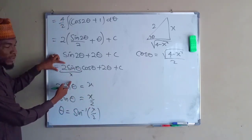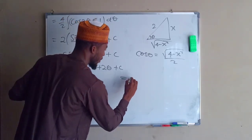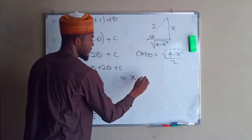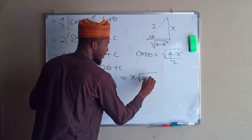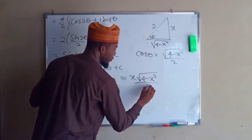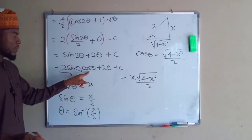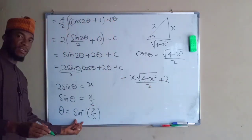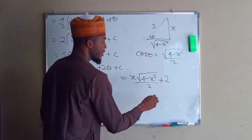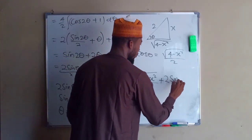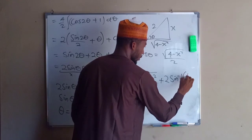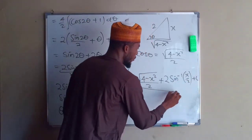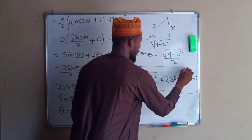We can see that 2 sin theta is x, cos theta is the square root of 4 minus x squared divided by 2, and theta is sin inverse of x over 2. Substituting back, we obtain x times the square root of 4 minus x squared divided by 2, plus 2 times sin inverse of x over 2, plus the constant of integration c. This is the final solution to the problem.